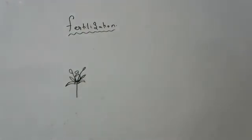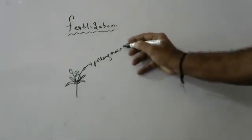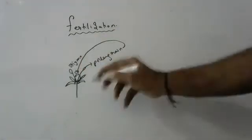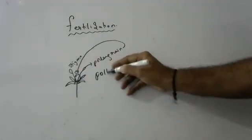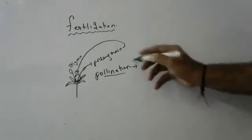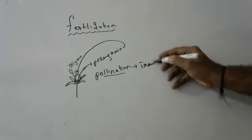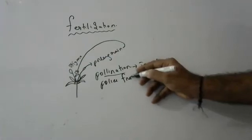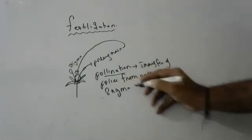Stamens produce pollen grains, and these pollen grains will go and fall on the stigma. The transfer of pollen from anther to stigma is called pollination.